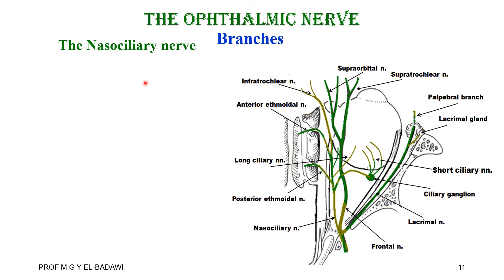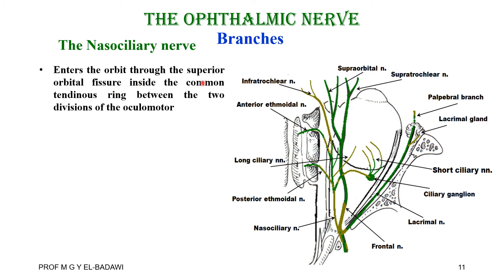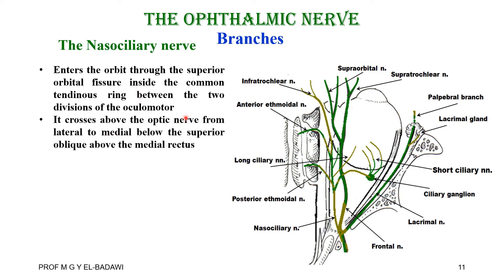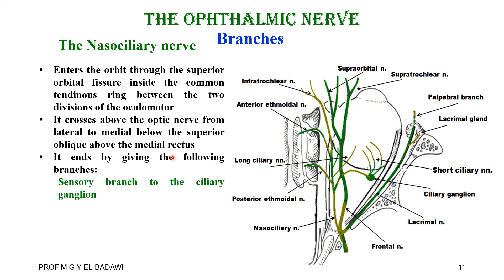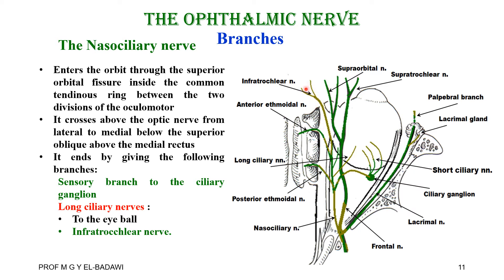The nasociliary nerve — the largest branch of the ophthalmic — enters the orbit through the superior orbital fissure outside the common tendinous ring, between the two divisions of the oculomotor nerve. It crosses the optic nerve from lateral to medial, running between the superior oblique and the medial rectus. It ends by giving sensory branches to the ciliary ganglion, long ciliary nerves to the eyeball, and the infratrochlear branch to the lower eyelid.